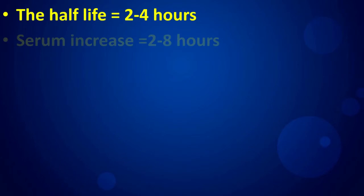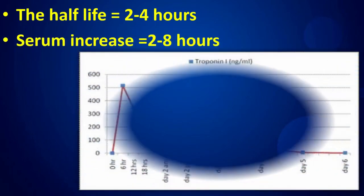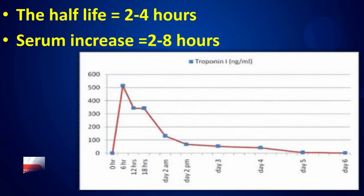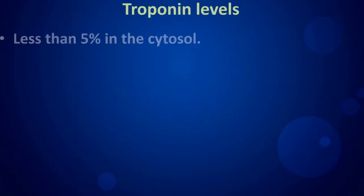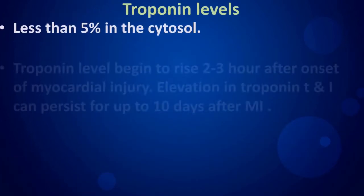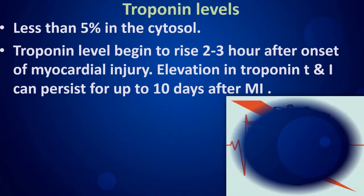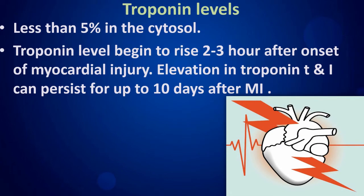The half-life of Troponin I is two to four hours, with serum levels increasing within two to eight hours. Troponin levels begin to rise two to three hours after onset of myocardial injury. Elevation in Troponin T and I can persist for up to ten days after myocardial injury.